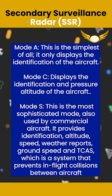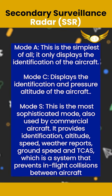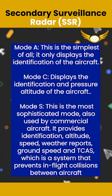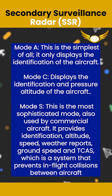Mode S is the most sophisticated, used by commercial aircraft. It provides position, altitude, speed, weather reports, ground speed, and TCAS, which is a system that provides in-flight collision avoidance between aircraft.